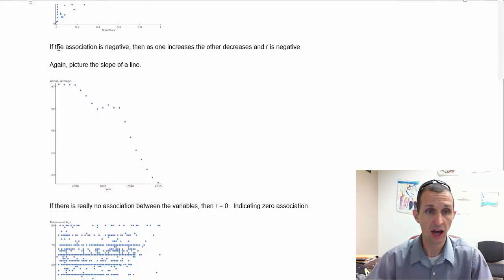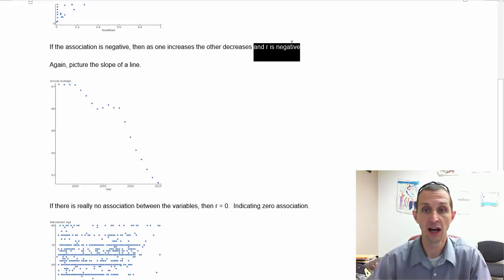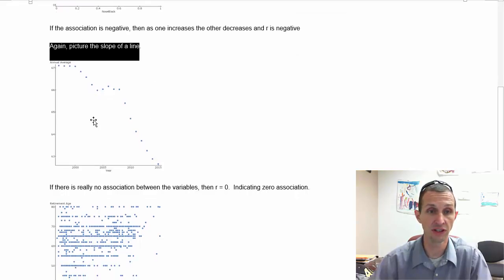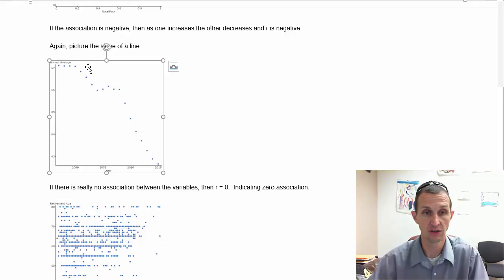If the association is negative, then as one variable increases the other decreases, or you might say they are inversely related, and R is negative. Again, you have the picture of a slope of a line. This is the labor participation rate, the overall labor participation rate, starting in about 1995 and going to 2015. As the year goes by, the actual labor participation is going down. If I were to draw a line, it would be going down through here.